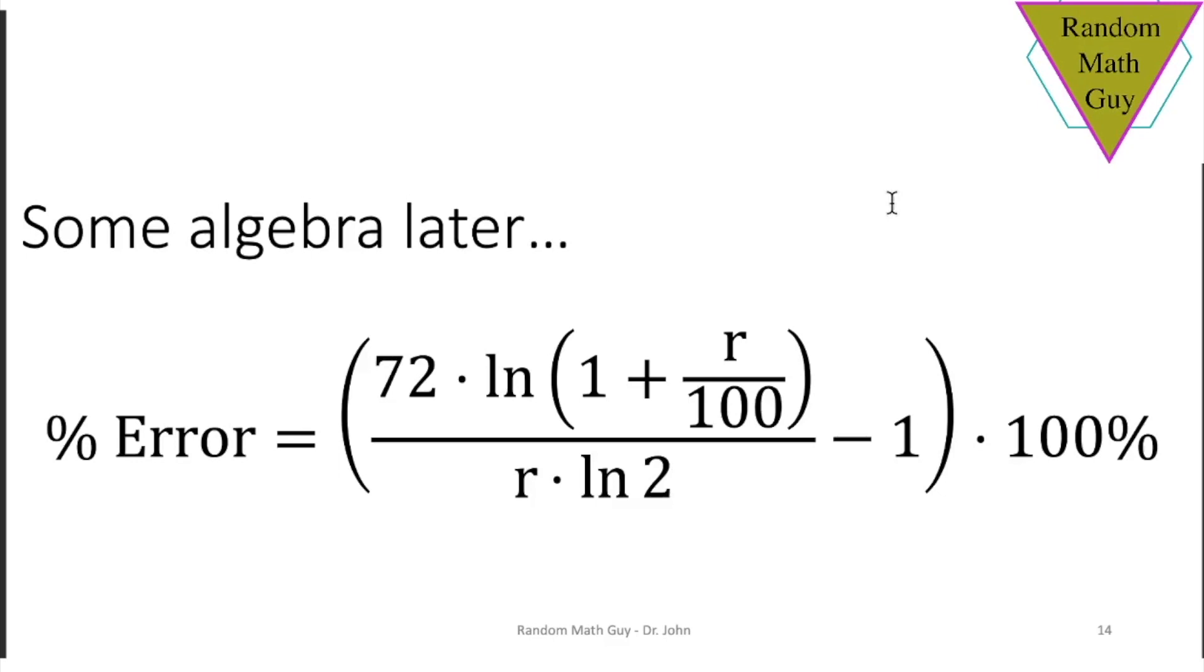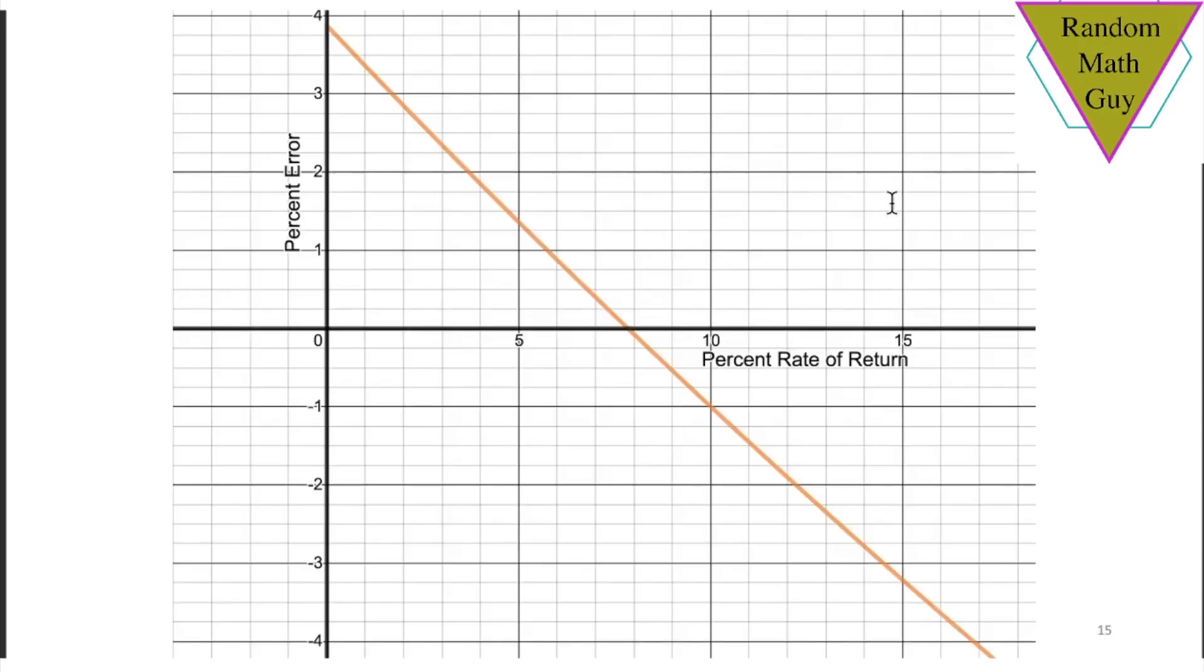Now this equation is looking a little bit gross, but you could work with it. So let's plot it and just see what's going on. You can see here that the percent error based on the rate of return, it's around between positive 4 and negative 4% from a rate of return of just above 0 to about 17.